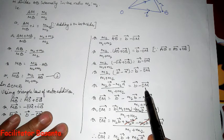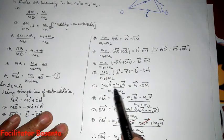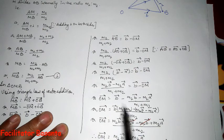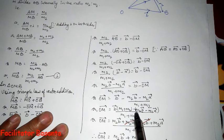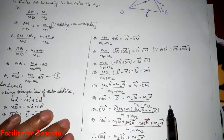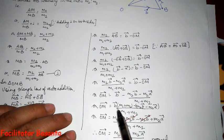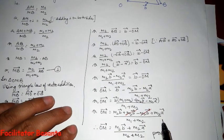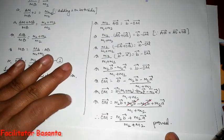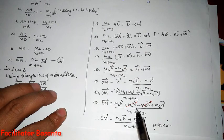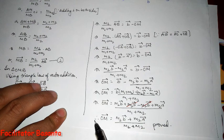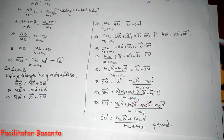Since we need to find OM vector, we rearrange. Taking LCM as M1 plus M2, OM vector equals B vector times M1 plus M2, minus M2·B vector, plus M2·A vector — all divided by M1 plus M2. Expanding: M1·B vector plus M2·B vector minus M2·B vector plus M2·A vector. The M2·B vector terms cancel. Therefore, OM vector equals M1·B vector plus M2·A vector divided by M1 plus M2. Proved.